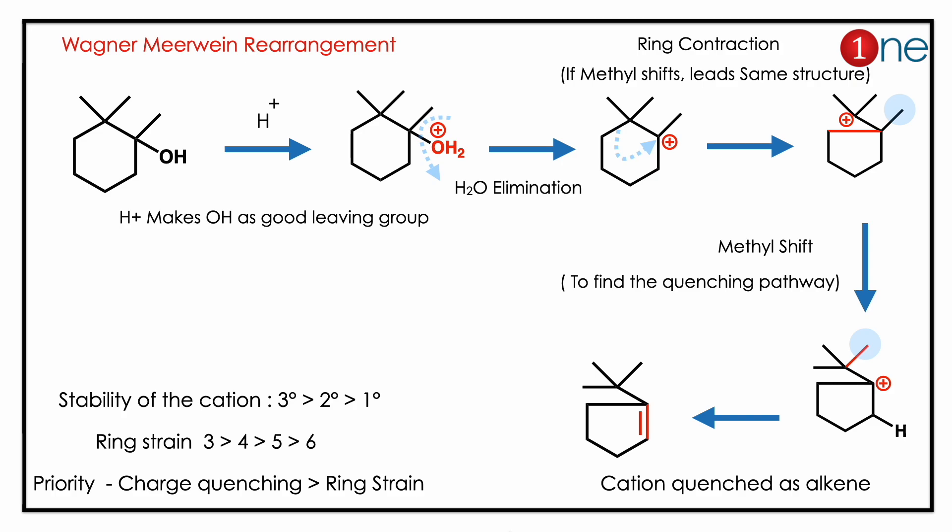There is no available hydrogen, which is why the methyl shift happened. The priority of charge quenching is higher than ring strain. The key concept here is that in Wagner-Meerwein rearrangement, the most stable cation always forms.